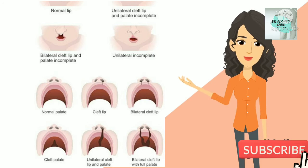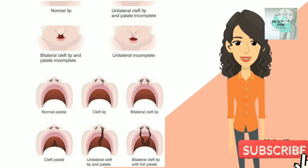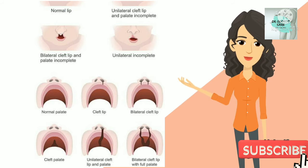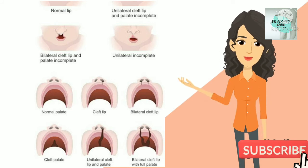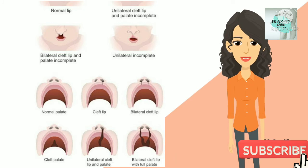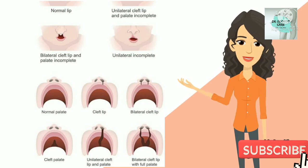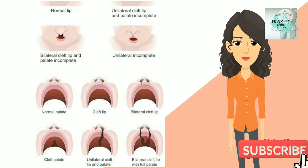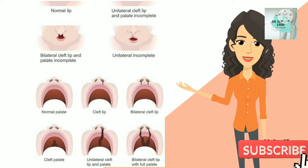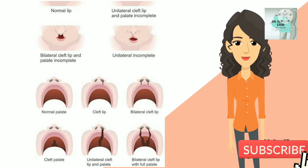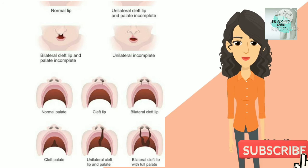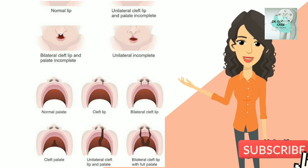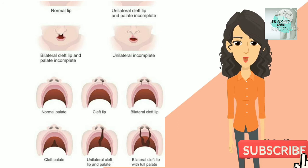Let's see the causes of cleft lip and cleft palate. In most cases, the cause of cleft lip and cleft palate is unknown, and these conditions cannot be prevented. Most scientists believe clefts are due to a combination of genetic and environmental factors. Another potential cause may be related to a medication a mother may have taken during pregnancy. Some drugs may cause cleft lip and cleft palate.